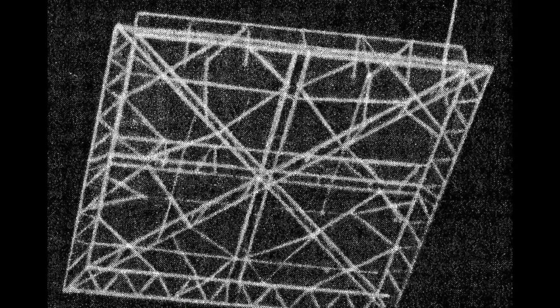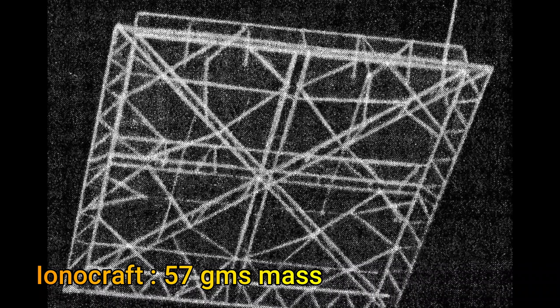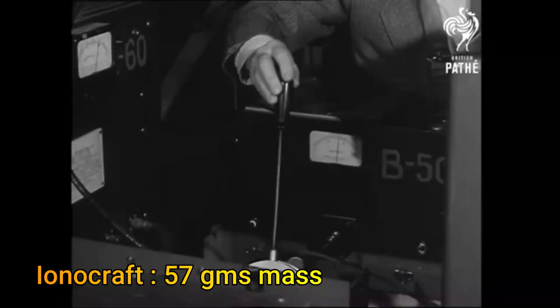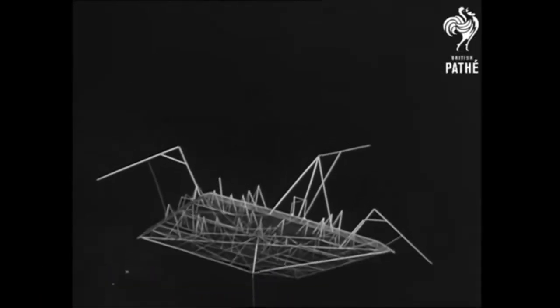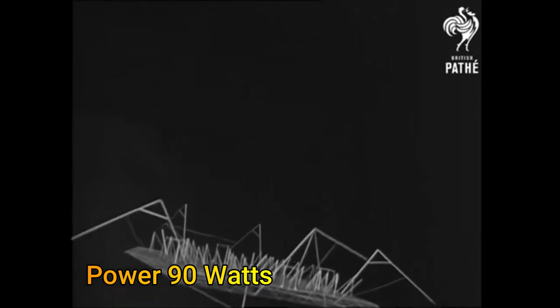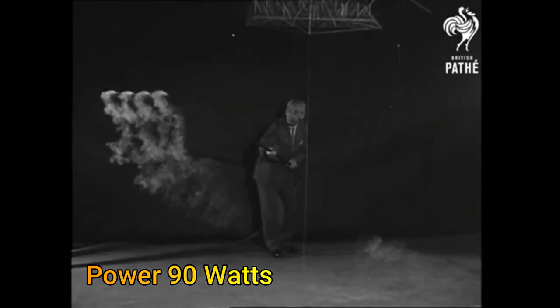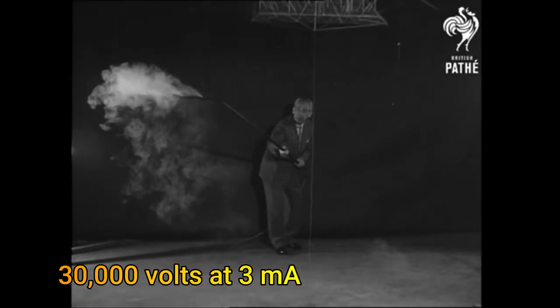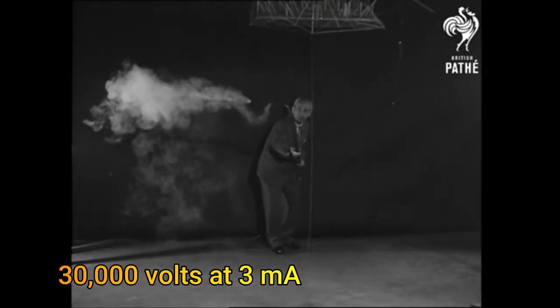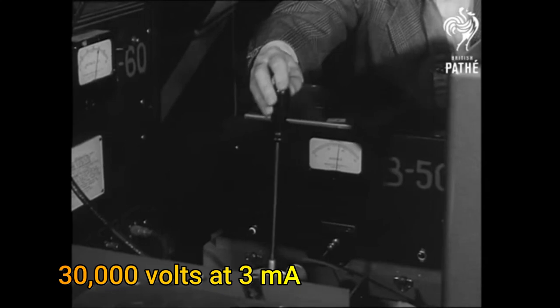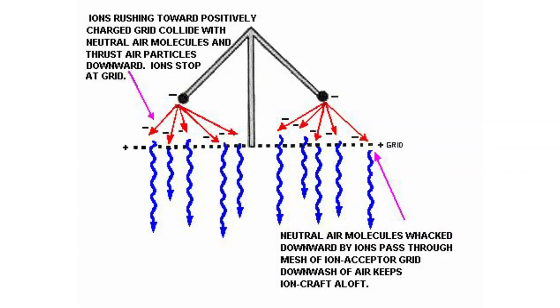He demonstrated the hovering of a machine with no moving parts of 57 grams mass and with just 90 watts of power. The ionocraft was consuming 3 milliamps current at 30,000 volts. This translated to 0.63 kilograms per kilowatt or 6.2 newtons of lift force per kilowatt.